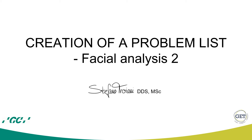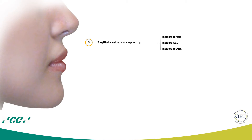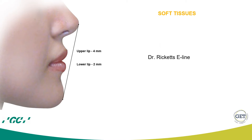In the second part of the facial analysis, we will go through the analysis of the profile, which is probably the most relevant for the orthodontist, since it is also the part that we can influence most. In order to analyze the profile, we will divide the analysis into upper lip and lower lip. But before getting into these details, we will start with analyzing the position of the lips with respect to the face.